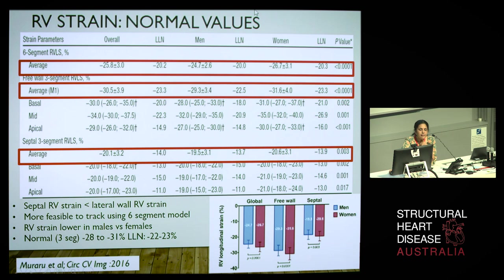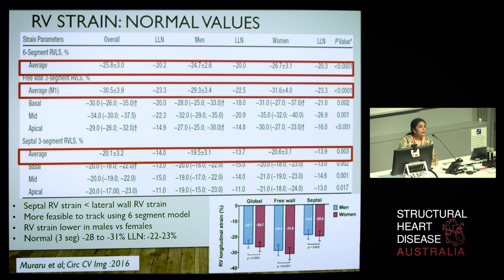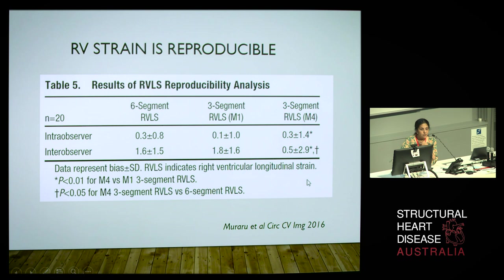The mean values were quite similar — about 26% — and higher in women than in men, whether looking at global free wall or septal strain. For any lab: decide what your protocol is going to be, whether you draw six segments, take an arithmetic mean of the lateral three segments, or average six segments. The Padua paper also showed good inter- and intra-observer variability.